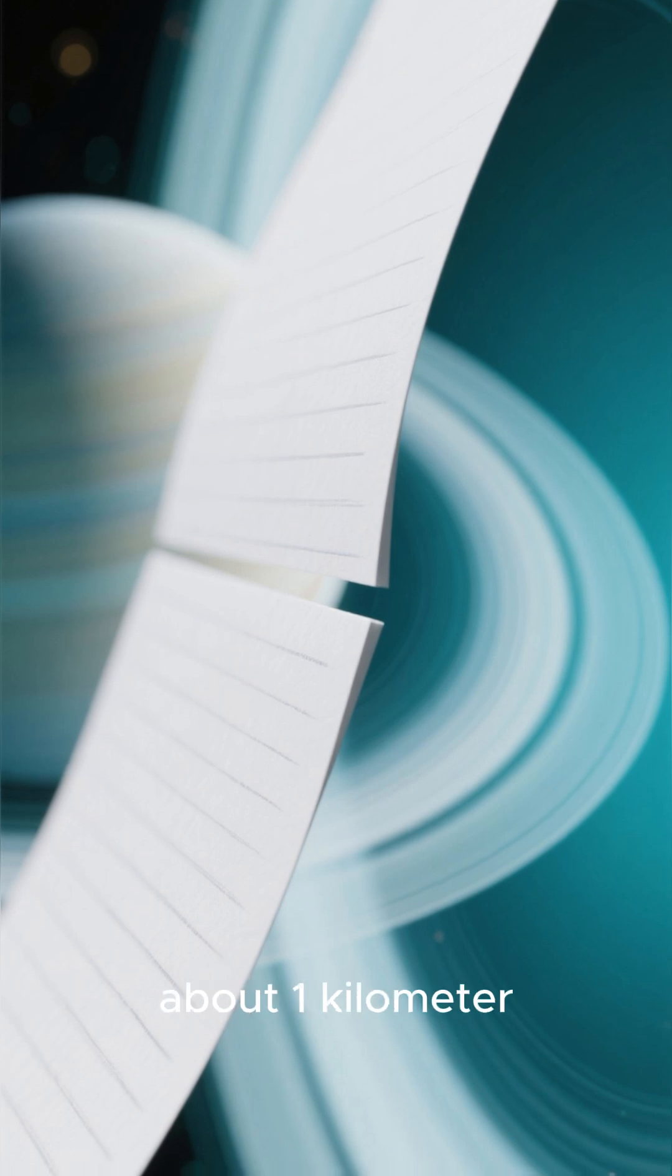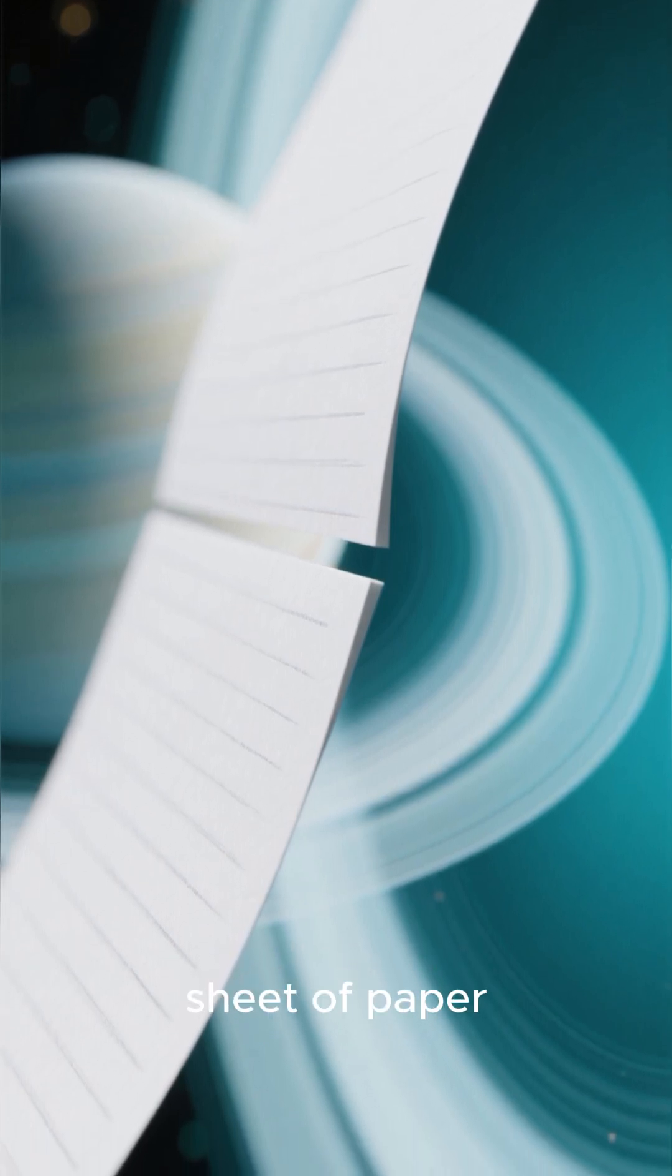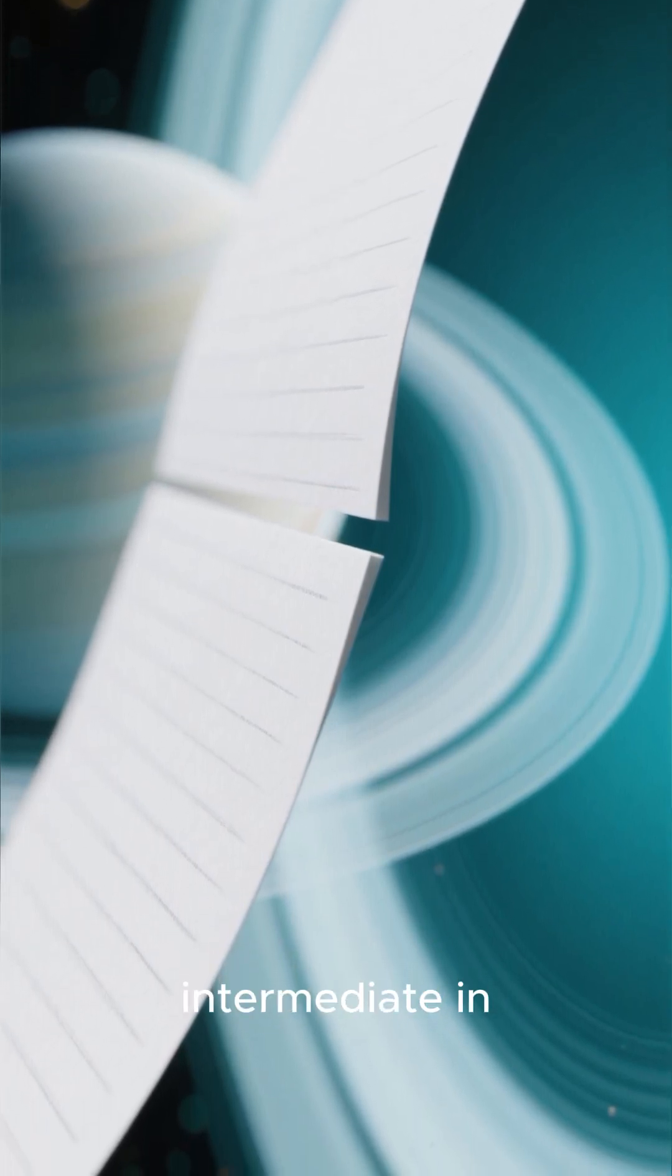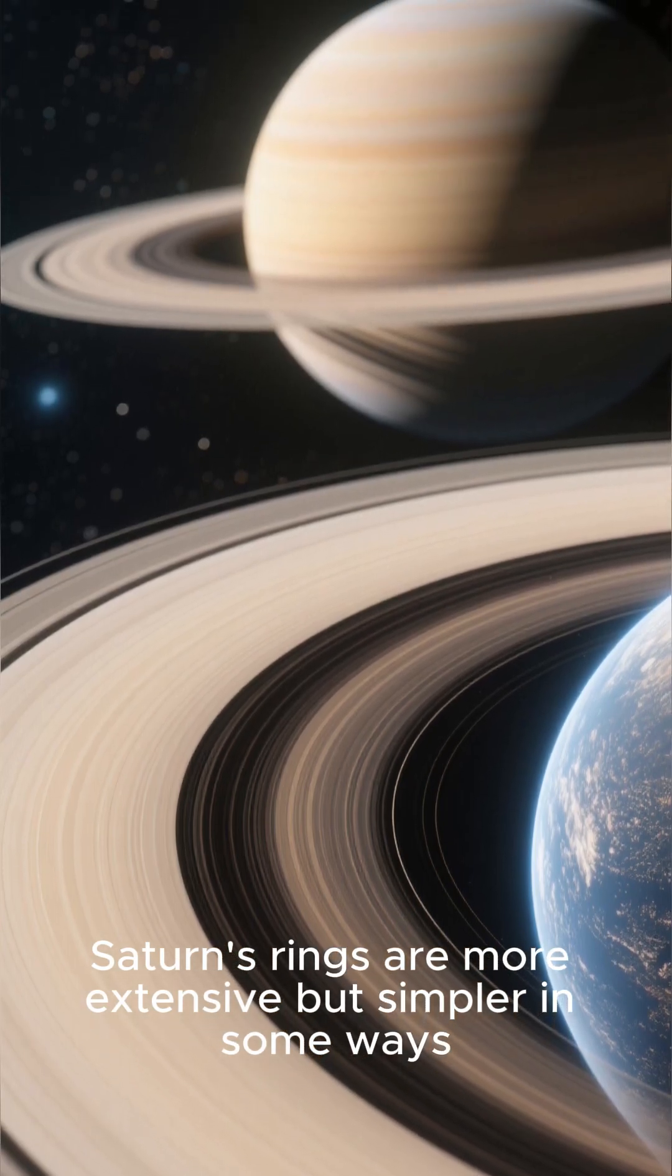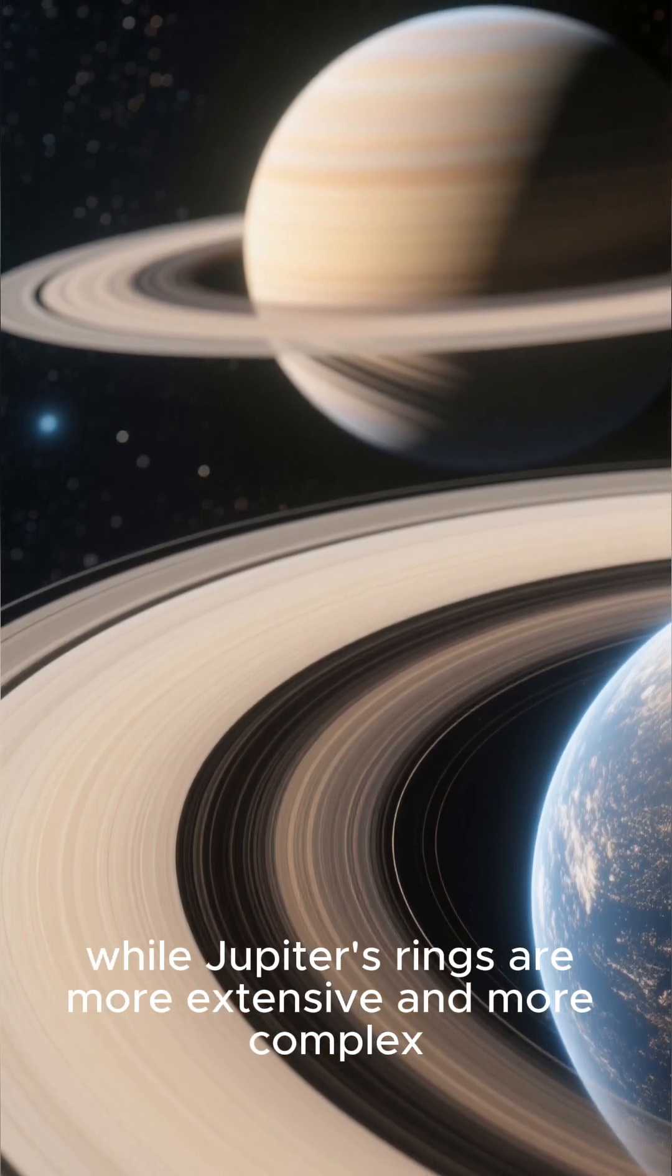Its rings are only about one kilometer wide. That's thinner than a sheet of paper. And they're intermediate in complexity. Saturn's rings are more extensive but simpler in some ways, while Jupiter's rings are more extensive and more complex.